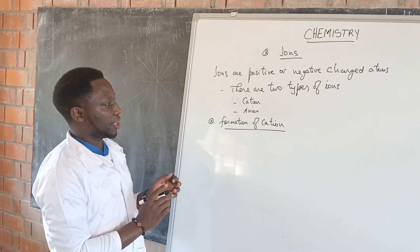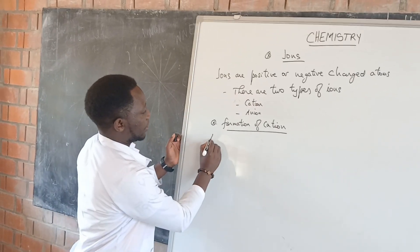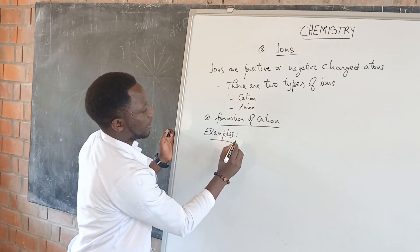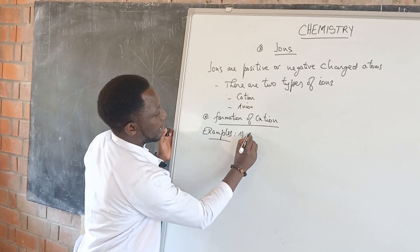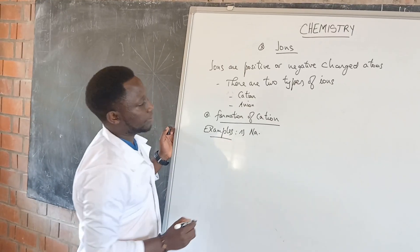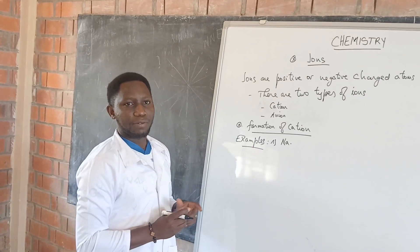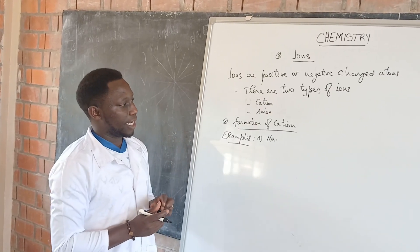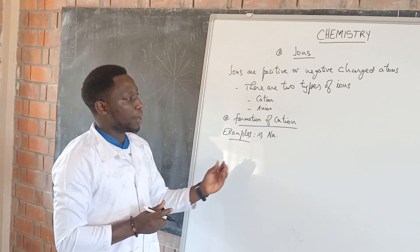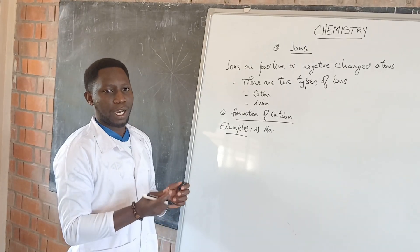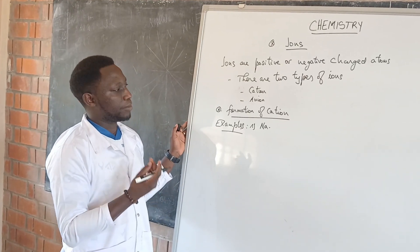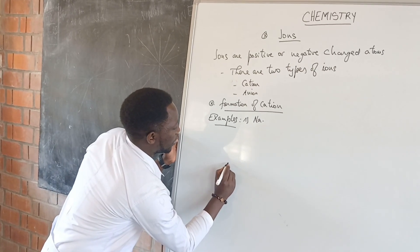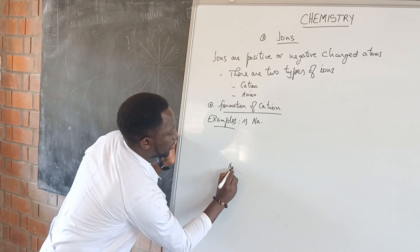It is positively charged. Let's deal with different examples. Let's start with example one: sodium. Sodium is number 11 on the periodic table, so it has 11 electrons. We are going to show how this sodium atom becomes an ion — becomes charged. First, I have to draw the electronic configuration of sodium.